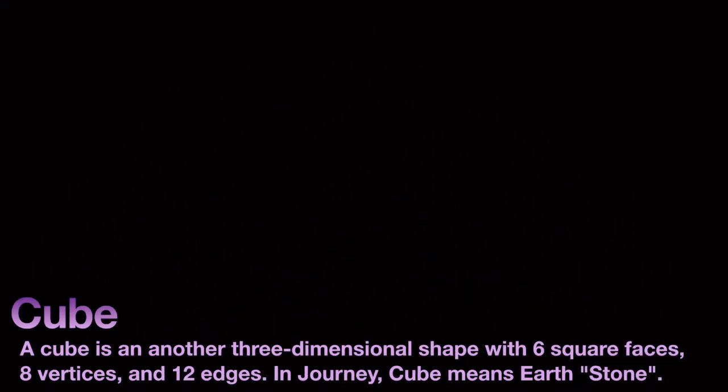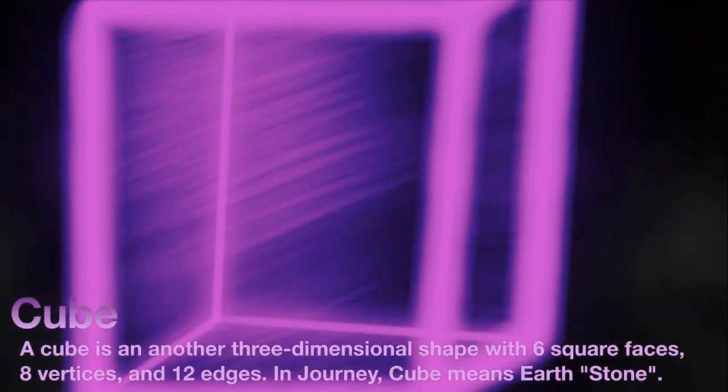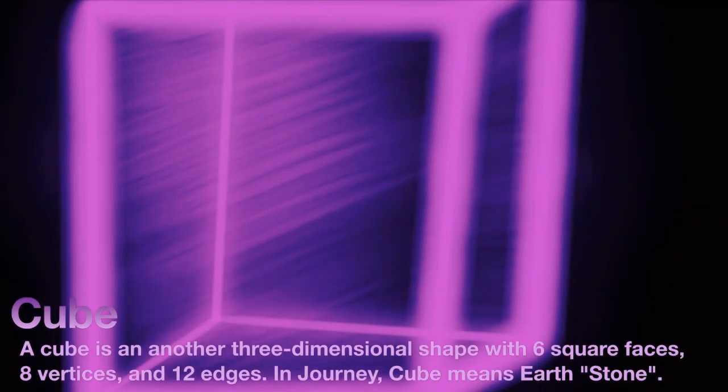A cube is another three-dimensional shape with six square faces, eight vertices, and twelve edges. In Journey, cube means Earth. Stone is the Earth's spirit.